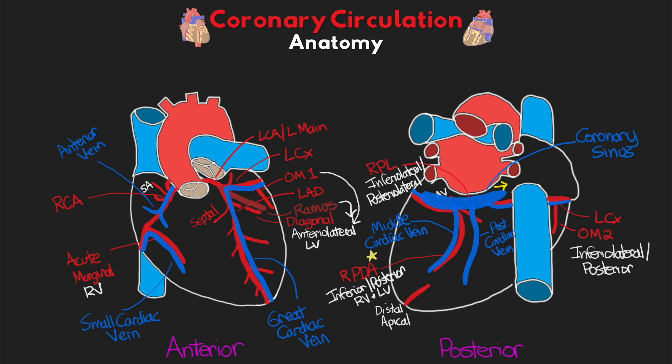And that is the anatomy of our coronary circulation — both the coronary arteries and coronary veins. Knowing these arteries specifically is going to be really important as we get into talking about EKGs and the areas potentially being affected by what we see on that EKG. Before we dive into that, the next lesson will cover some of the physiology in play when looking at coronary circulation, so make sure to stay tuned.